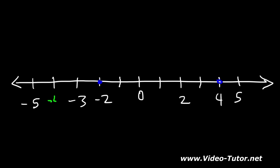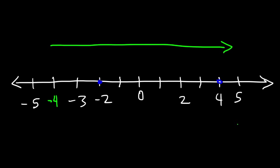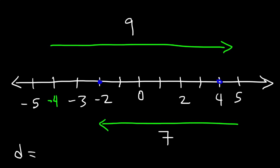Now let's say we started at negative 4 and traveled to position 5, and then from position 5 to position negative 2. What is the distance traveled and what is the displacement? For the distance, we traveled from negative 4 to 5 — that's 9 units to the right — and then from 5 to negative 2, that's 7 units to the left. To find the distance, simply add those values: 9 plus 7 equals a total of 16 units.